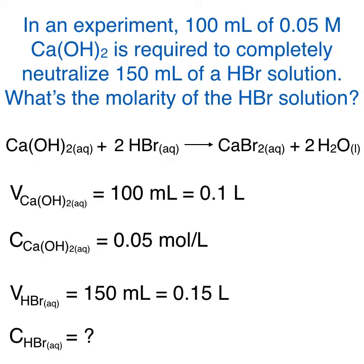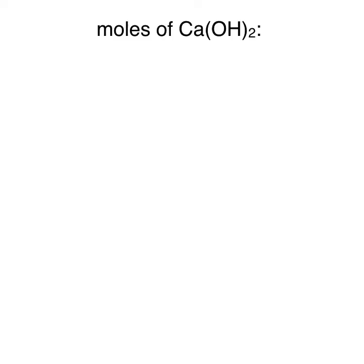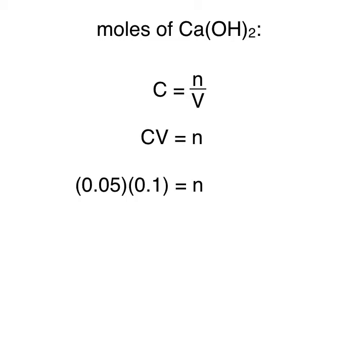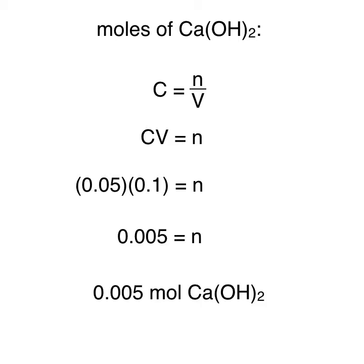The problem asks for the molarity of hydrogen bromide, which is just another way of asking for molar concentration. To calculate this, we must first determine how many moles of calcium hydroxide were used. Since we have the concentration and volume of calcium hydroxide, we use c = n/v, rearranged to isolate n. Substituting our known values gives n = 0.005 moles of calcium hydroxide.